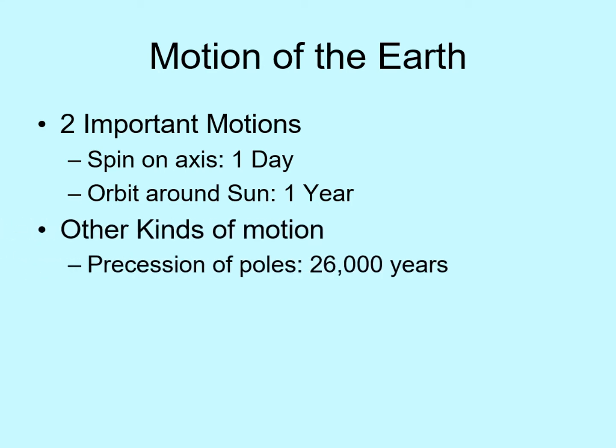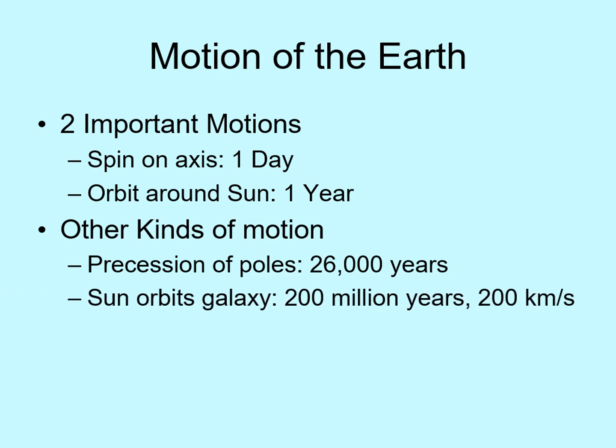Our spin axis — effectively the line between the north and south poles — changes very slowly over a 26,000-year period. We call this the precession of the poles, and it changes what constellations are visible in any given season. Our whole solar system orbits the Milky Way galaxy at a speed of 200 kilometers per second. The galaxy is so big that it takes us 200 million years just to go around once. This motion, along with the motion of the other stars, changes the shapes of constellations over millions of years.